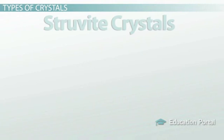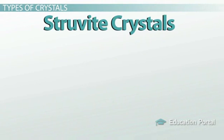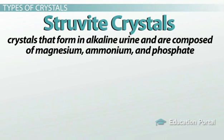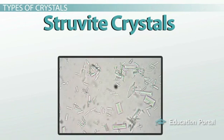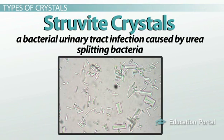In contrast to calcium oxalate crystals, struvite crystals are crystals that form in alkaline urine and are composed of magnesium, ammonium, and phosphate, and therefore are sometimes called triple phosphate stones. They look like coffin lids under the microscope and are sometimes associated with a bacterial urinary tract infection caused by urea-splitting bacteria.